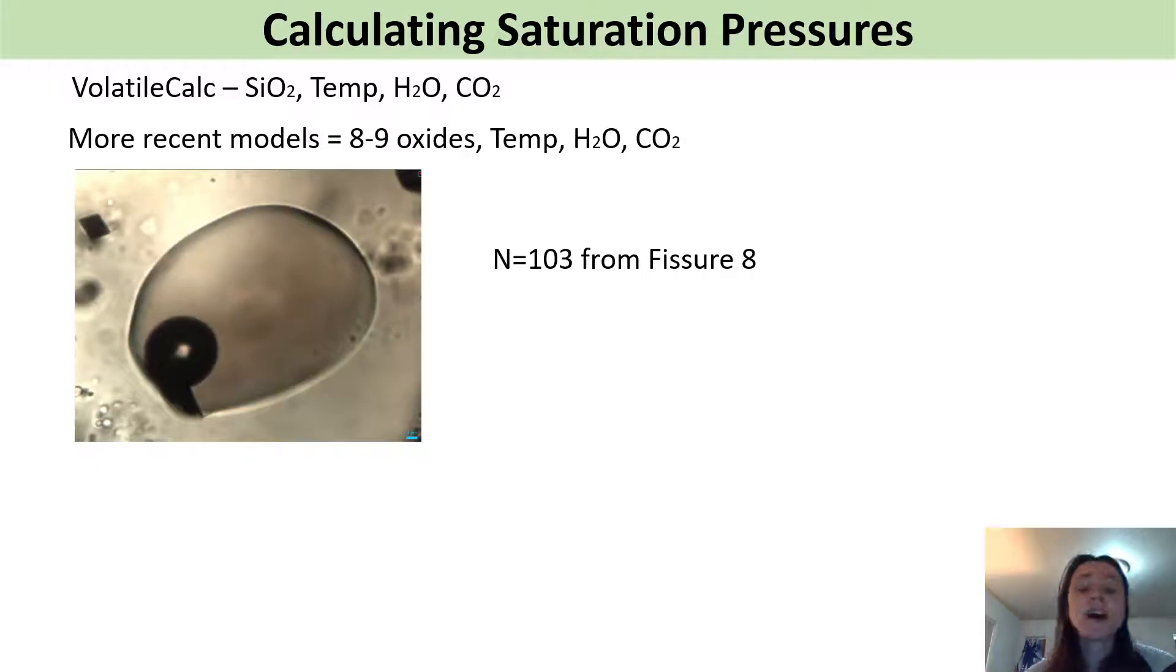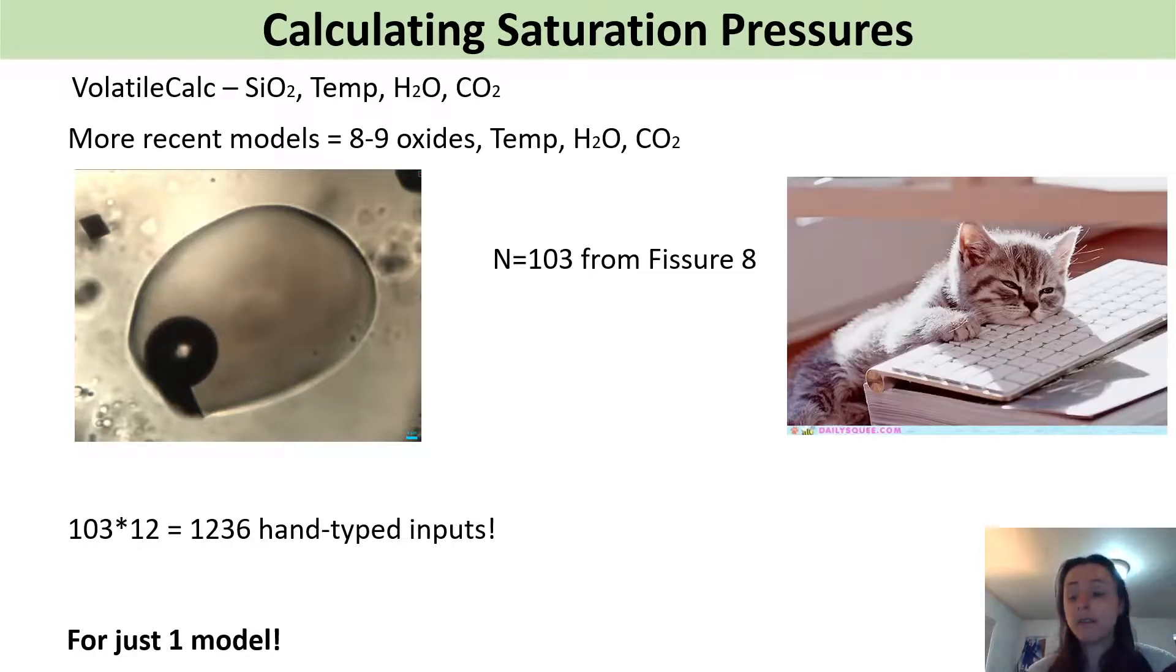So just as an example, one of the projects for my PhD, I looked at 103 melt inclusions from Fisher 8 or Isla Ao from Kilauea and this would require me just using Magnusap to hand type 1200 inputs. And say I wanted to compare all of the different models, I would be hand typing thousands and thousands of inputs and not only would I get really fed up but I would likely make mistakes as well.